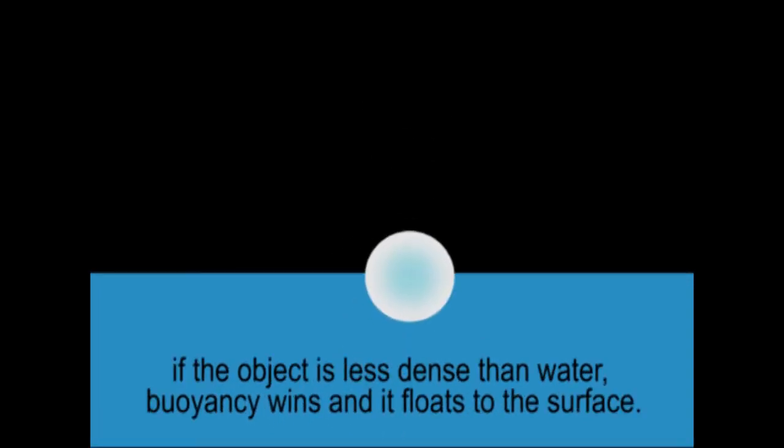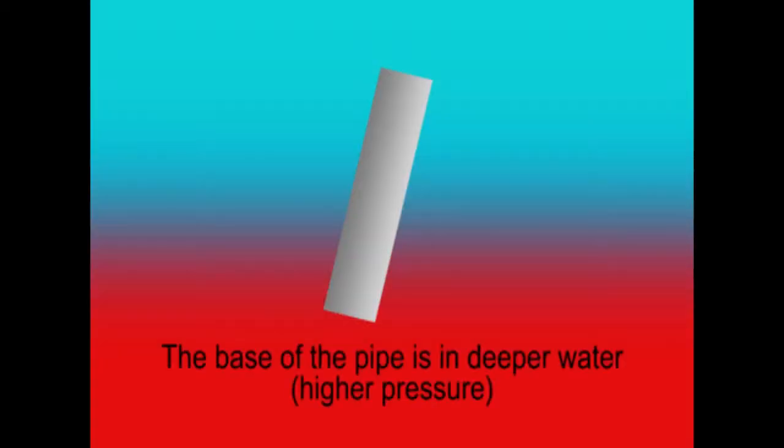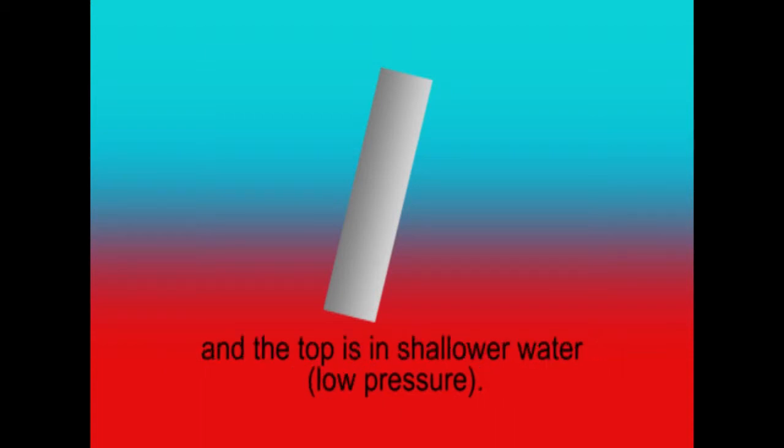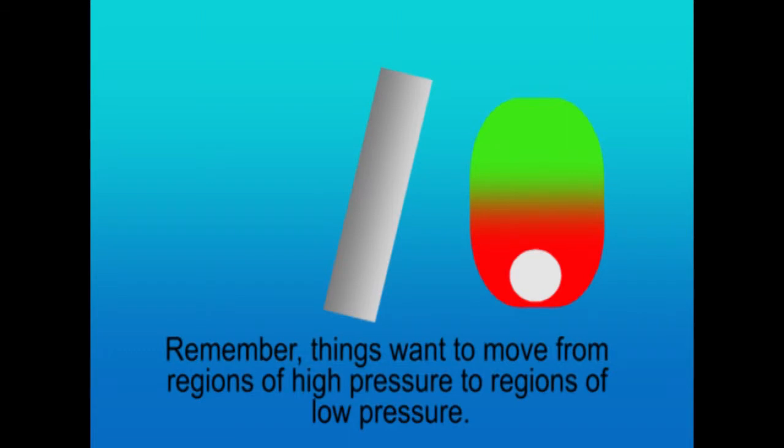What causes the air and water to rise up the pipe? At the base, the pipe is in deeper water, high pressure, and the top is in shallow water, low pressure. The pressure difference causes the air inside the pipe to rise. Remember, things always want to move from regions of high pressure to regions of low pressure.